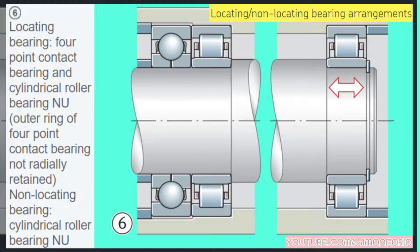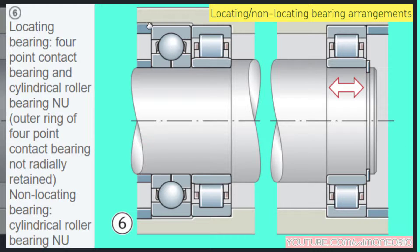The sixth example: the locating bearing is actually two bearings — a four-point contact bearing, which handles the axial force, and a cylindrical roller bearing, which handles the radial force. Note that the outer ring of the four-point contact bearing is not radially retained, so you can see a gap there. The non-locating bearing is a cylindrical roller bearing that is all blocked in the housing but can slide axially.